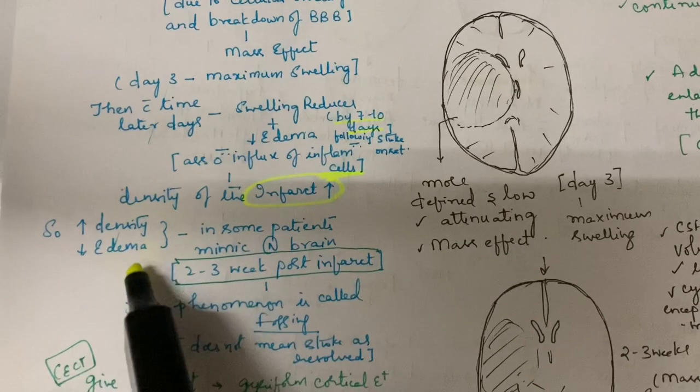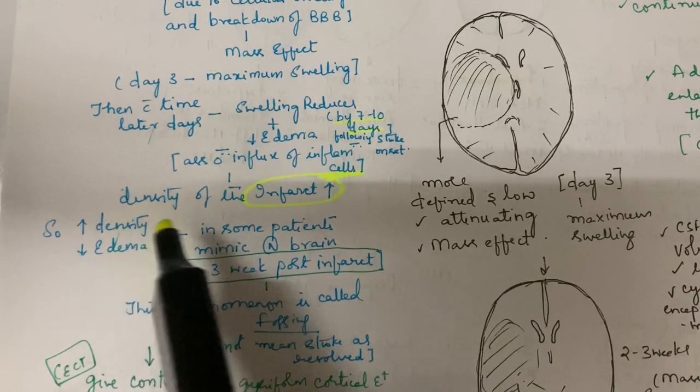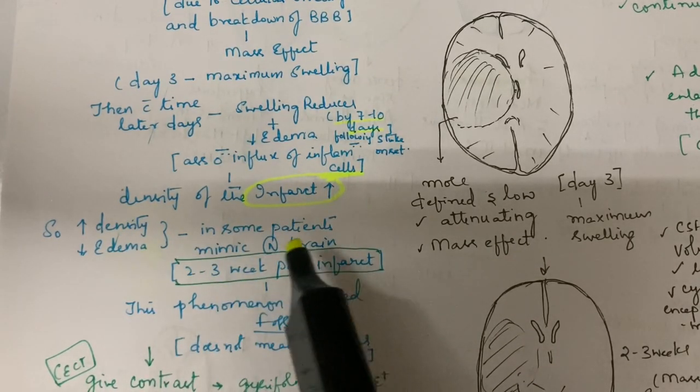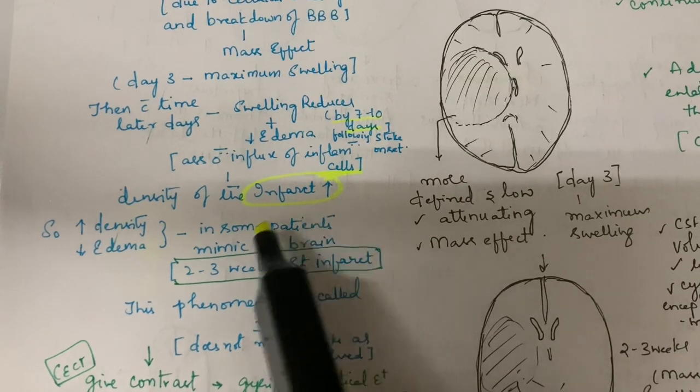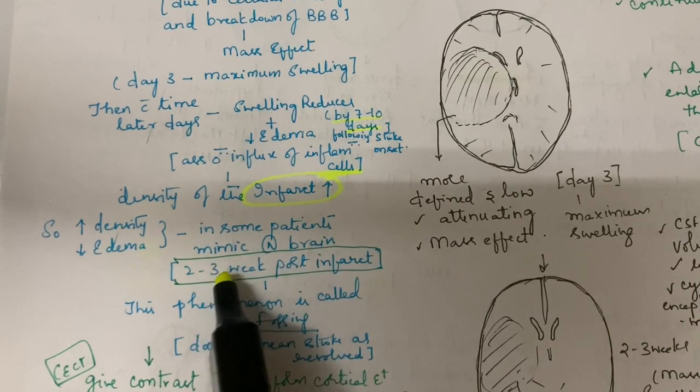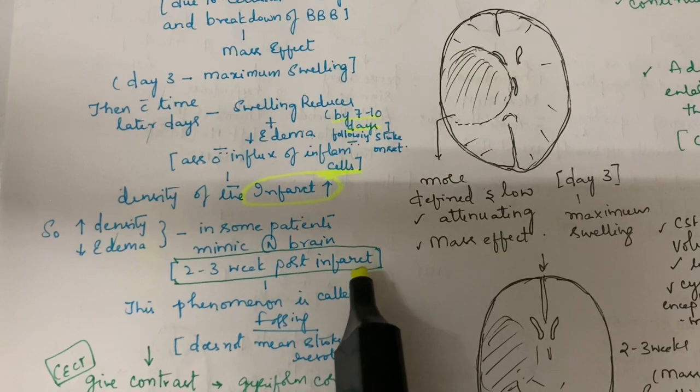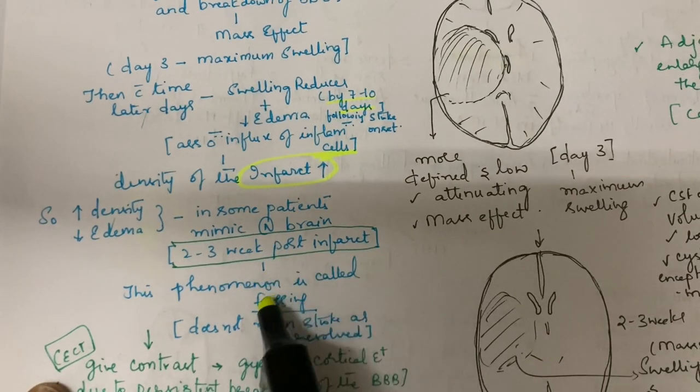Due to decreased edema and increased density, the infarct appears normal. It may mimic normal brain. We should not confuse it with normal brain. This peaks at two to three weeks post-infarct. This is called fogging.